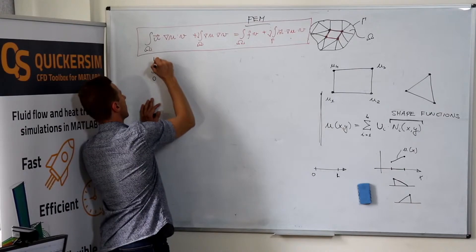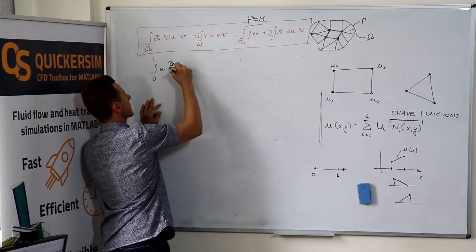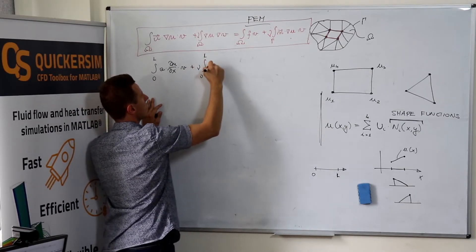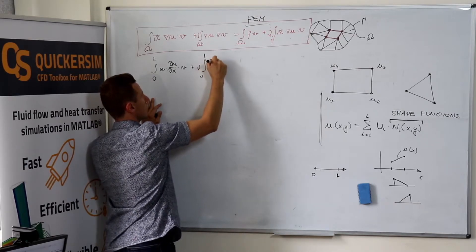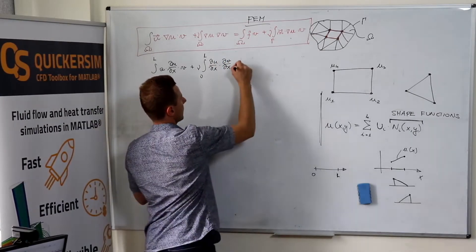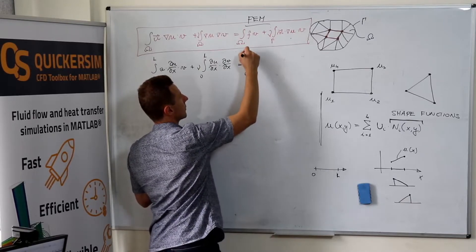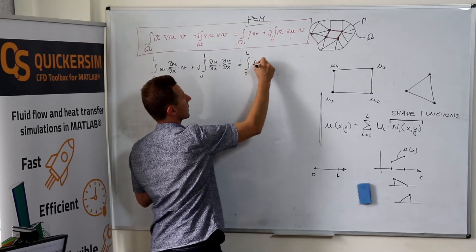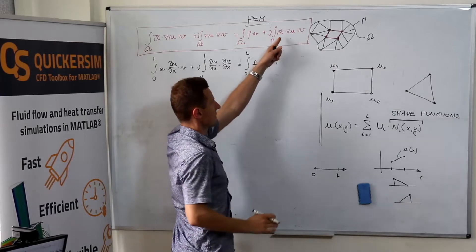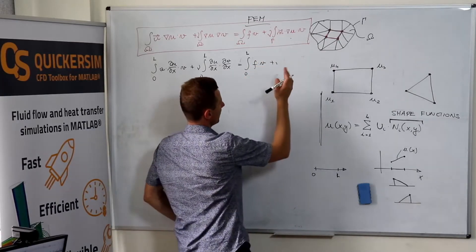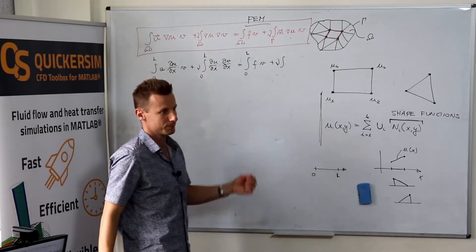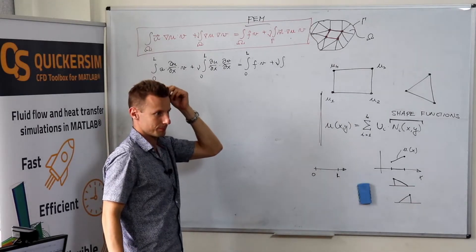This would mean zero to l, a times d dx times v plus zero to l, gradient, sorry not gradient, du dx times dv dx equals integral from zero to l, f times v plus, what is that?